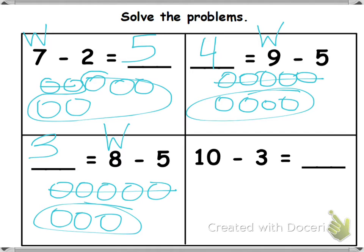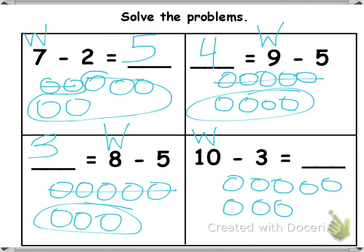What is my whole for 10 minus 3 equals blank? 10. So now I'm going to draw 10. Take away how many? 3. Circle the rest. How many is that? 7.